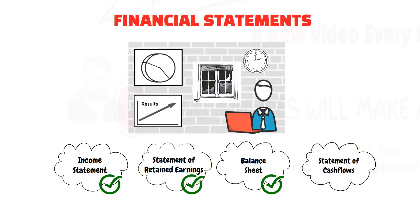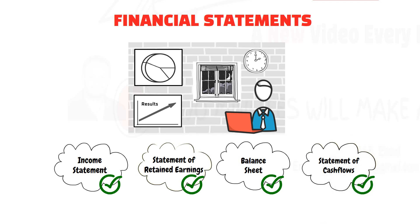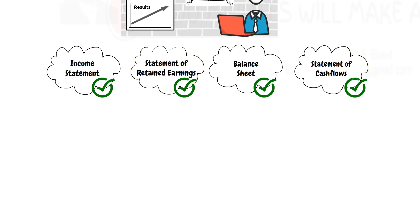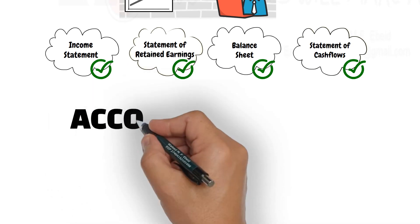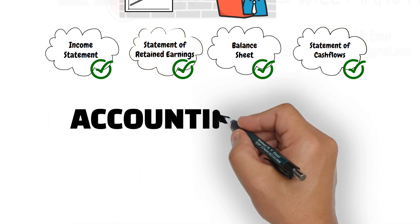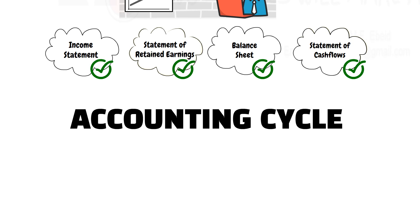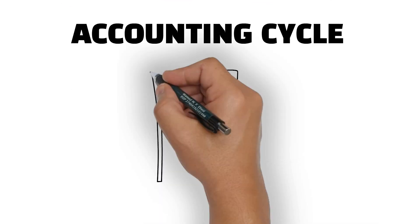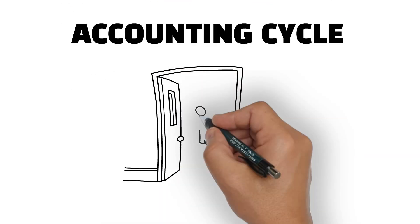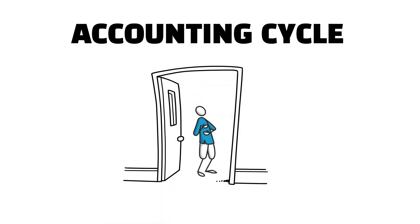These are the four financial statements that accountants prepare each reporting period. To produce these statements, accountants follow a series of steps known as the accounting cycle. Let us talk about that in the following video.